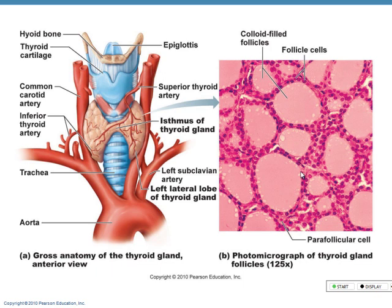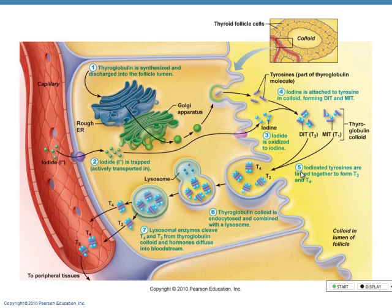T3 and T4 — triiodothyronine and thyroxine — that's what's in the soup. The parafollicular cells create the hormone through a multi-step process — this could be a possible short-answer question on your next exam. These are the steps to the production of thyroid hormone in the thyroid gland.